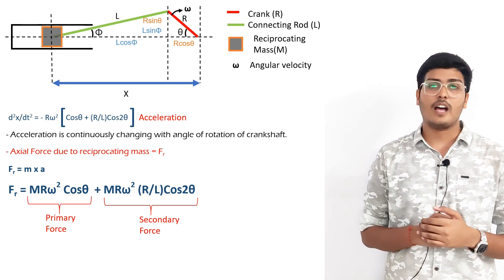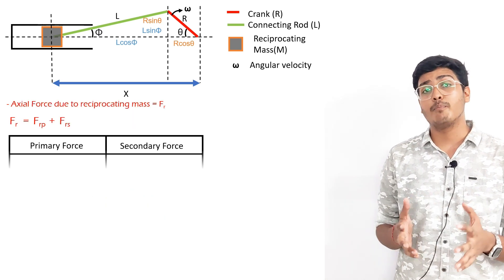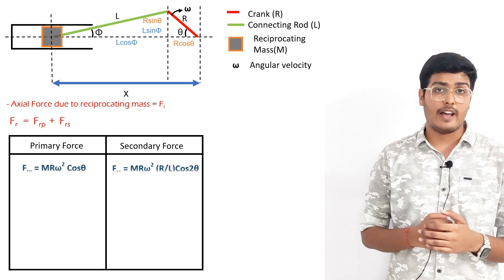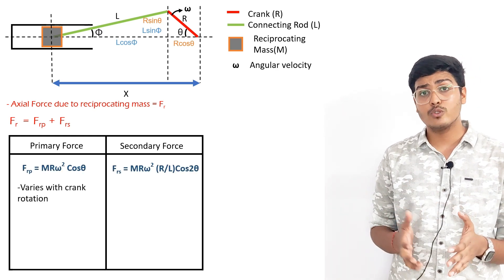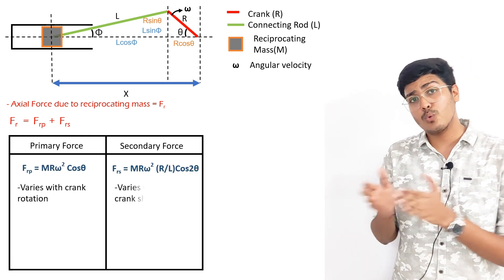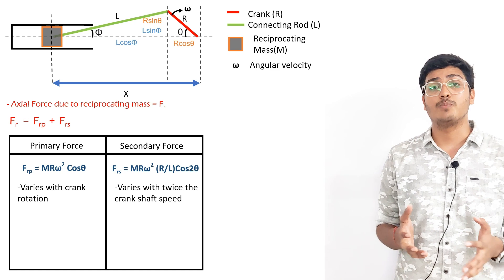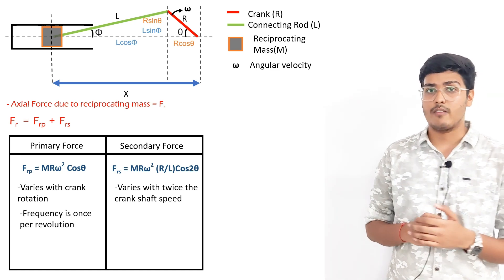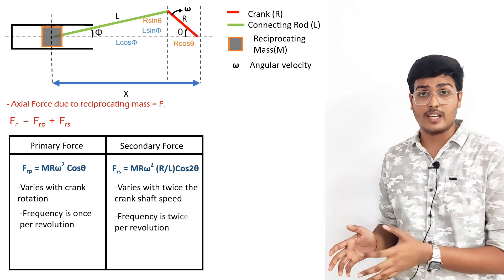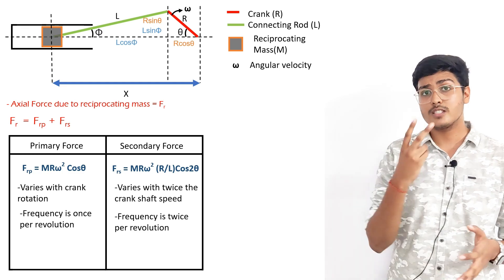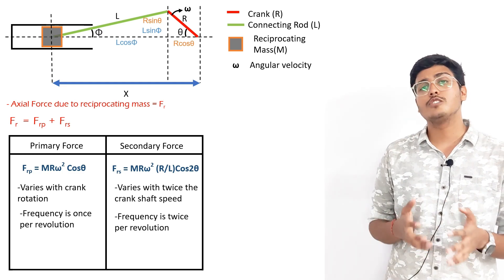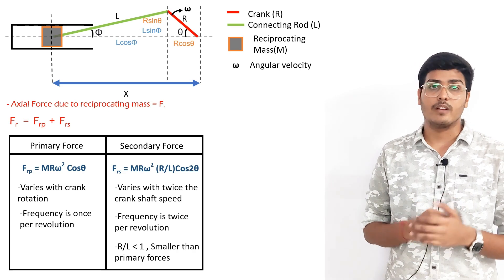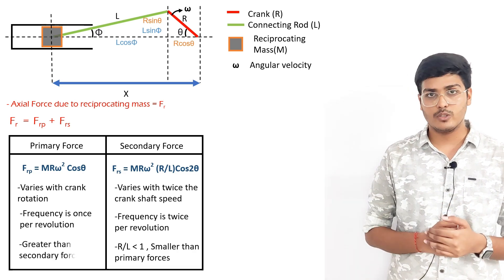Both of these forces act along the cylinder axis. Comparing them, the primary force varies with the crank rotation and the secondary force varies with twice the crankshaft speed, meaning the frequency of primary forces is once per revolution and the frequency of secondary forces is twice per revolution. Also, since r/l is less than 1, the magnitude of the primary force is greater than that of the secondary forces.